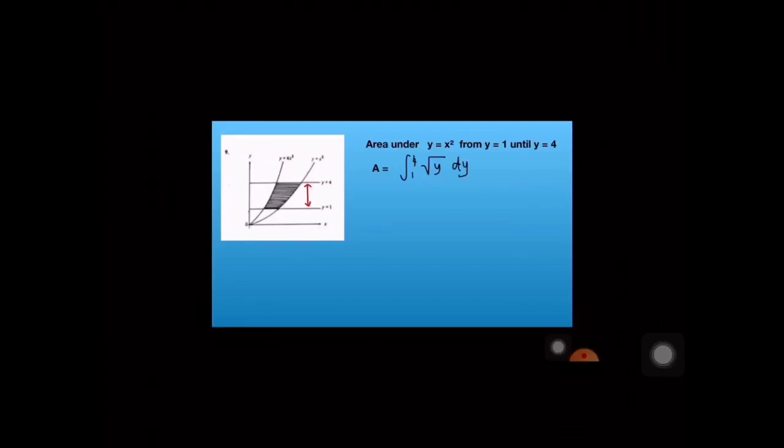Kalau X je sama dengan square root Y. Kita masukkan nilai. Kita akan dapat 14 per 3 unit square.